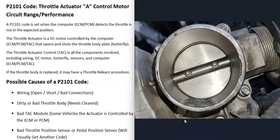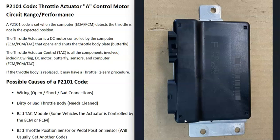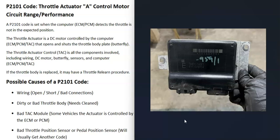Another possible cause is a bad computer. Depending on the vehicle, this could be a dedicated throttle actuator control module or it could be built into the main computer — the engine control module or the powertrain control module. If you suspect a bad throttle actuator control module, make sure that module is getting good power and a good ground, because these computers all need a good power supply or else they won't work correctly.